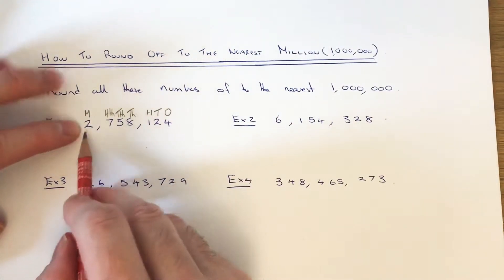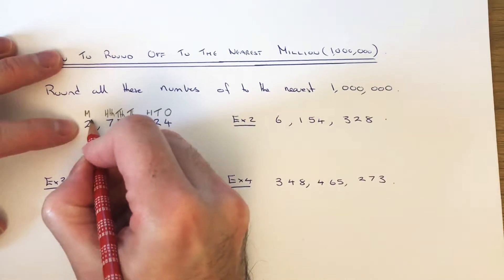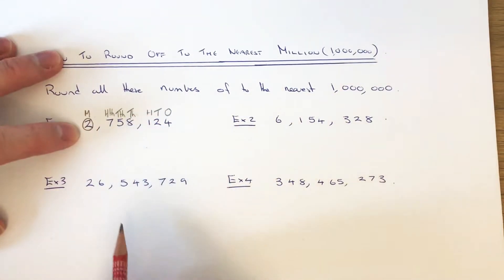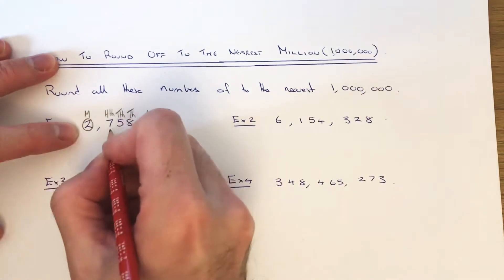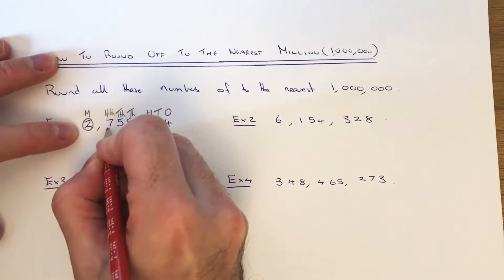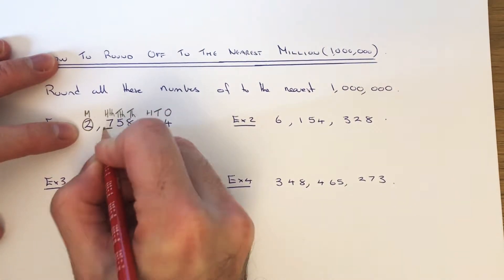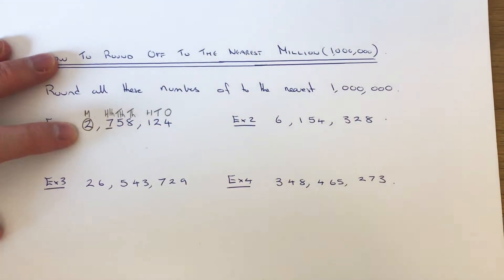So at the moment we have 2 million — this is the column we're interested in. We've got two choices: we can either round the number down to 2 million, that's basically keeping it the same, or we can round the number up to 3 million. To decide which one it's closest to, just look at the number after the millions column, in the hundreds of thousands column. If that number is 5 or above, you round up; if it's less than 5, you round down.